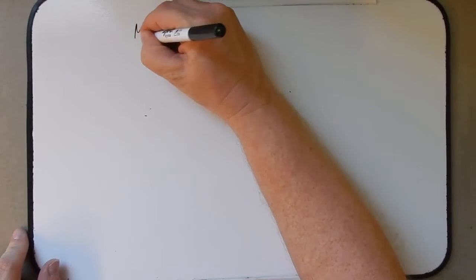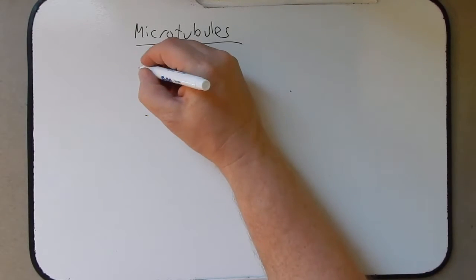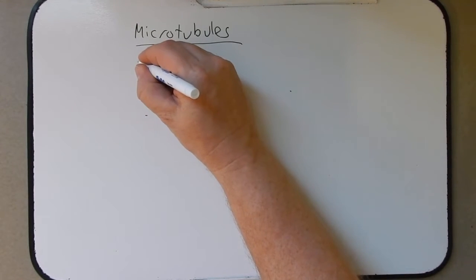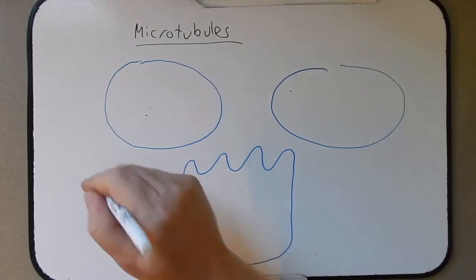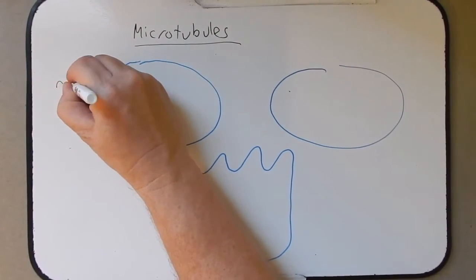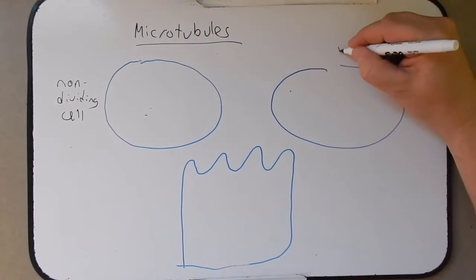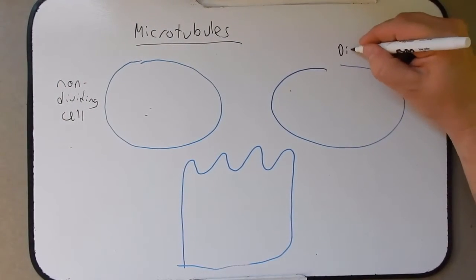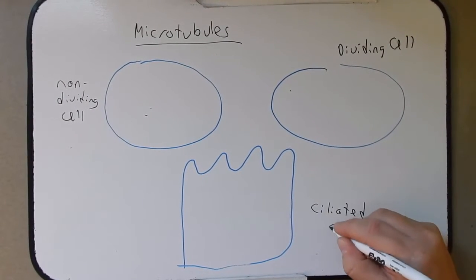Hello and welcome everyone to this podcast on microtubules. In introducing microtubules, let's think about the way they might appear in three different cell types: a non-dividing cell, a dividing cell, and a ciliated cell.